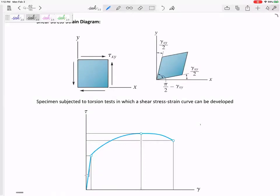Shear stress strain diagrams are similar. They have similar regions in them as far as the elastic region versus the yielding region versus the strain hardening region. And again, every material is very different.